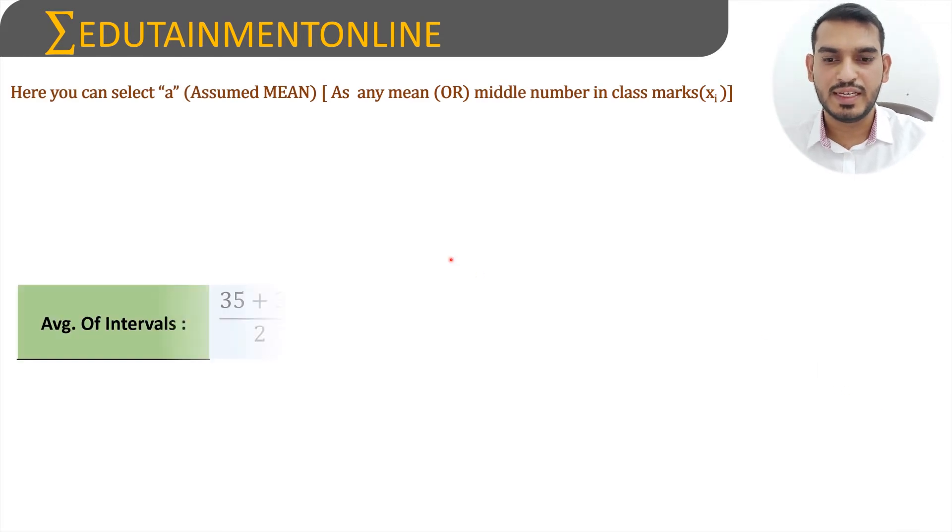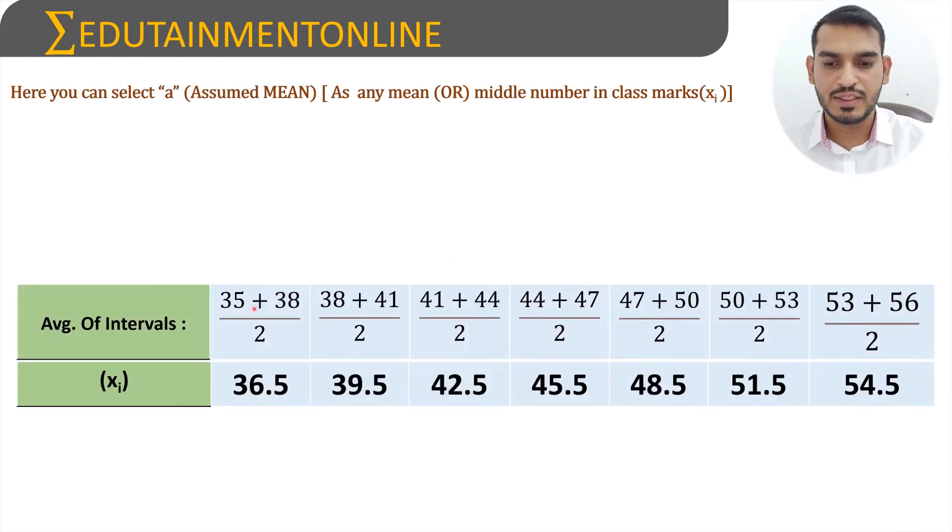So now we need to find the assumed mean. First let us take the average of the intervals which is 35 plus 38 by 2 as 36.5, and 38 plus 41 by 2 is 39.5, and 41 plus 44 by 2 is 42.5, and 44 plus 47 by 2 is 45.5, 47 plus 50 by 2 is 48.5, 50 plus 53 by 2 is 51.5, and 53 plus 56 by 2 is 54.5.